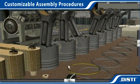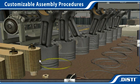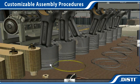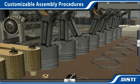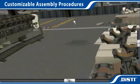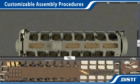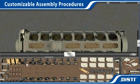Assembly procedures are also customizable to suit training needs. Students can build up sub-assemblies on the parts table, then drag those pieces to the proper location on the engine. Parts will only go into place if the student has positioned them over the proper area.